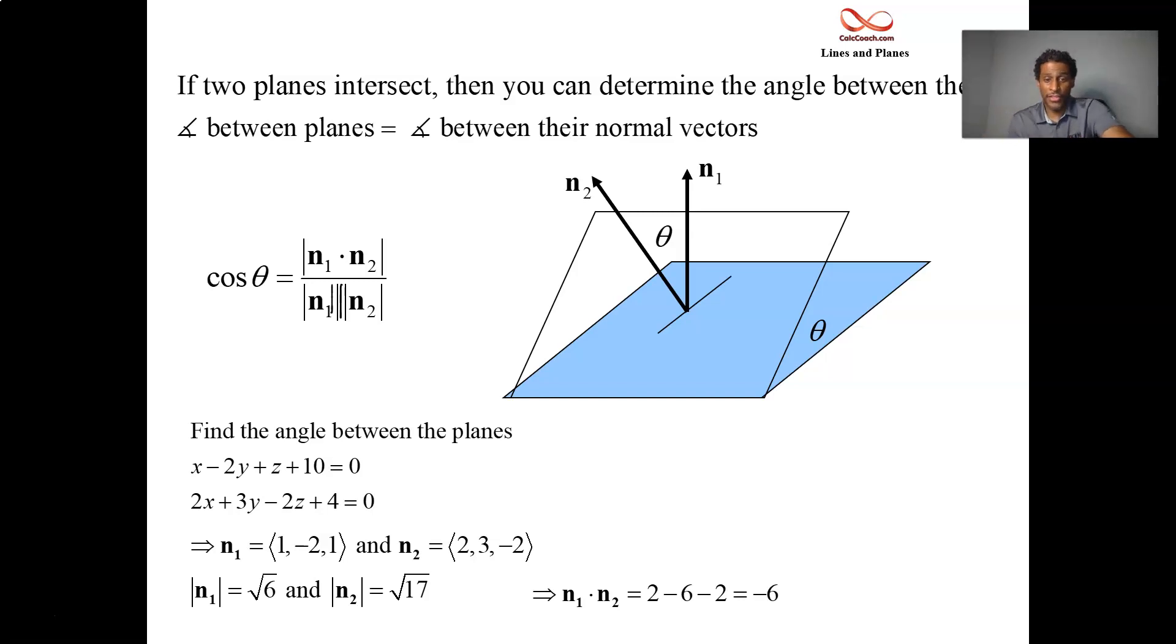So the numerator is the absolute value of that. So the numerator is 6 while the denominator is root 6 and root 17. 6 times 17 is 102. So theta technically is the cosine inverse of this fraction.